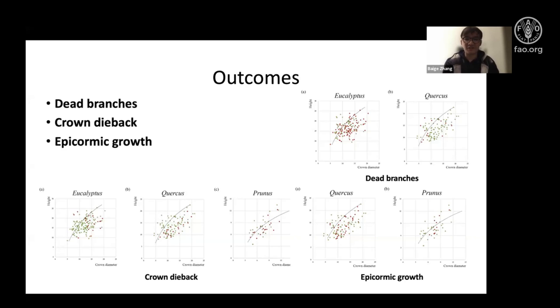For crown dieback, we also found a negative relationship between tree size and stress incidence. That means crown dieback can affect the capacity of ecosystem services significantly.